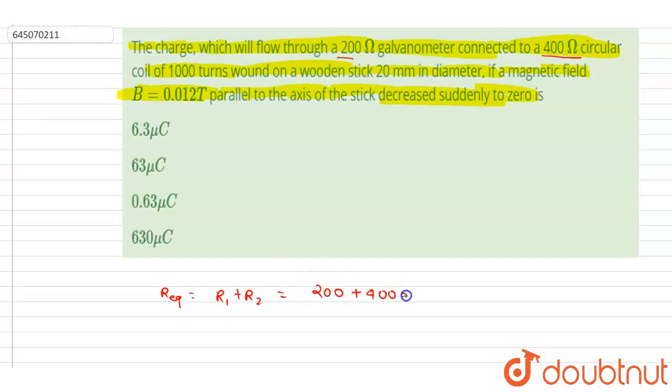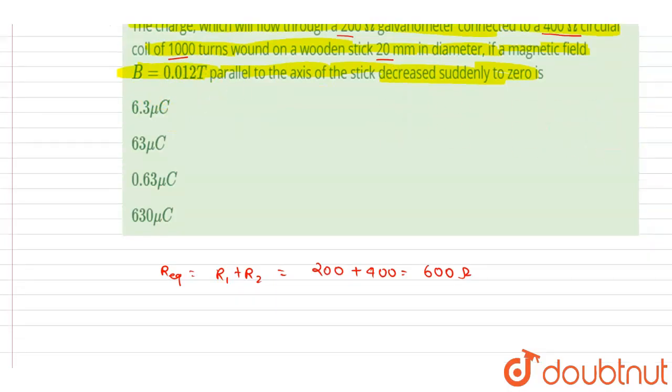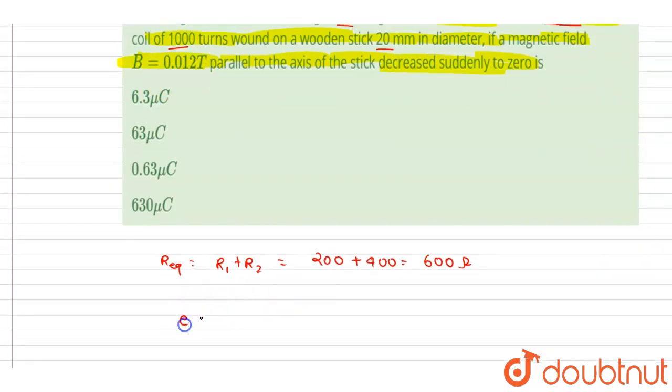And if you see here, the cross section area is given, the number of turns is given, and the magnetic field change is also given. So if I write down the induced EMF, induced EMF, we know that it is the number of turns times rate of flux change through each turn.